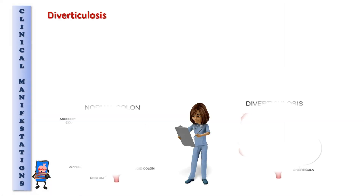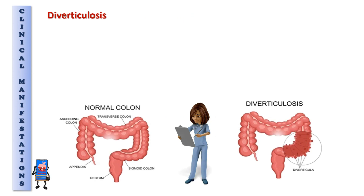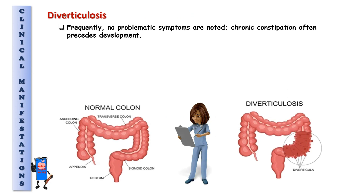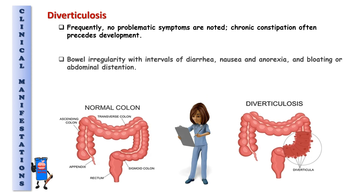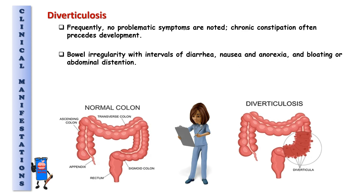Clinical manifestations. Diverticulosis: Frequently, no problematic symptoms are noted. Chronic constipation often precedes development. Bowel irregularity with intervals of diarrhea, nausea and anorexia, bloating or abdominal distension.